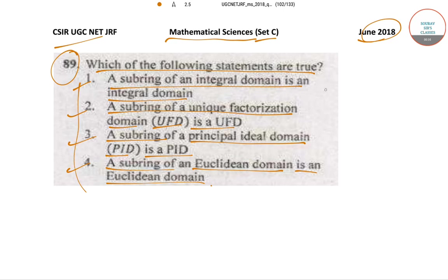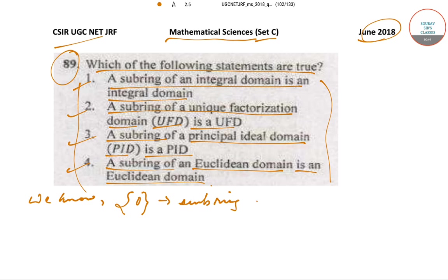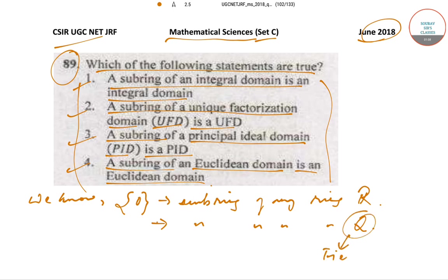These are the four options that we have been given. Let's start off with the question solution. We know that the set {0} is a subring of any ring R, which implies we can also say that {0} is a subring of the ring of rational numbers Q. Now, we also know that Q is a field.